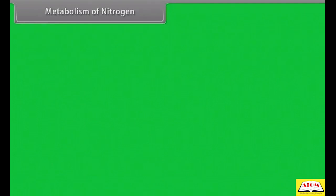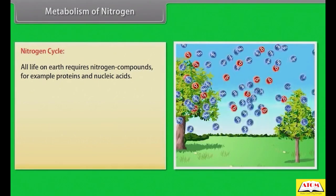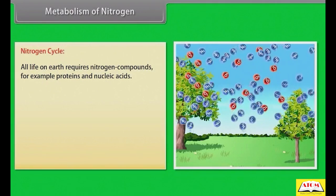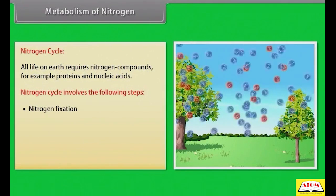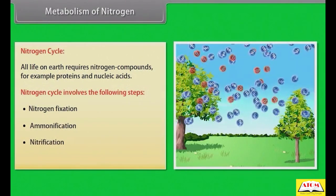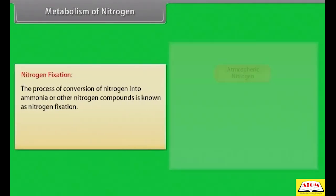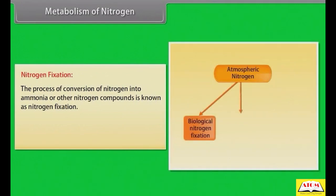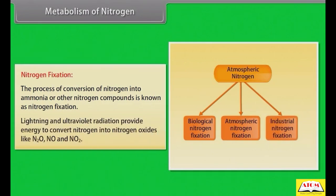Metabolism of nitrogen — Nitrogen cycle: all life on earth requires nitrogen compounds, for example proteins and nucleic acids. The nitrogen cycle involves the following steps: nitrogen fixation, ammonification, nitrification and denitrification. Nitrogen fixation: the process of conversion of nitrogen into ammonia or other nitrogen compounds is known as nitrogen fixation. Lightning and ultraviolet radiation provide energy to convert nitrogen into nitrogen oxides like N2O, NO and NO2.